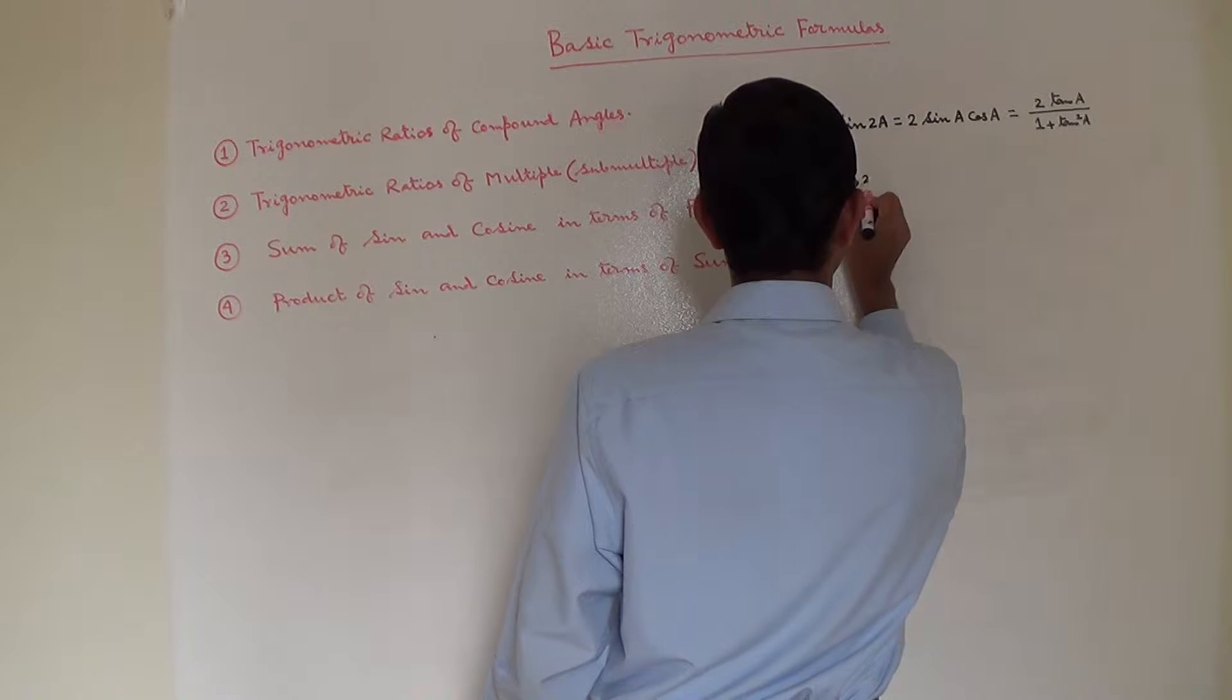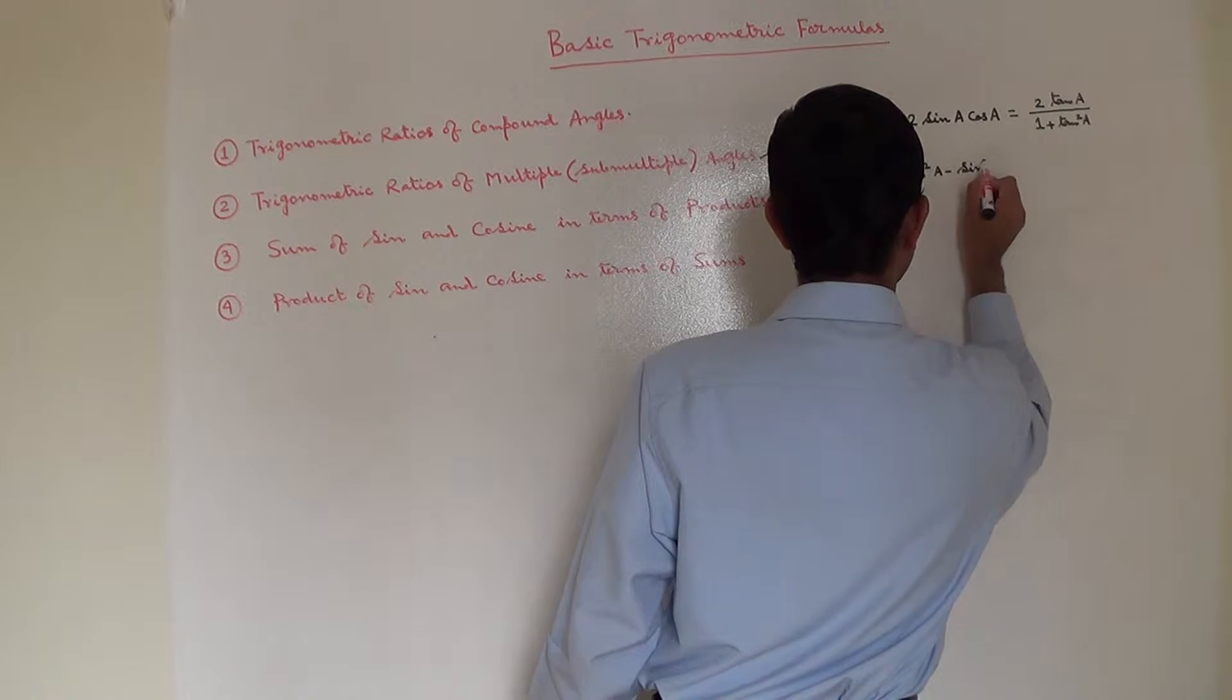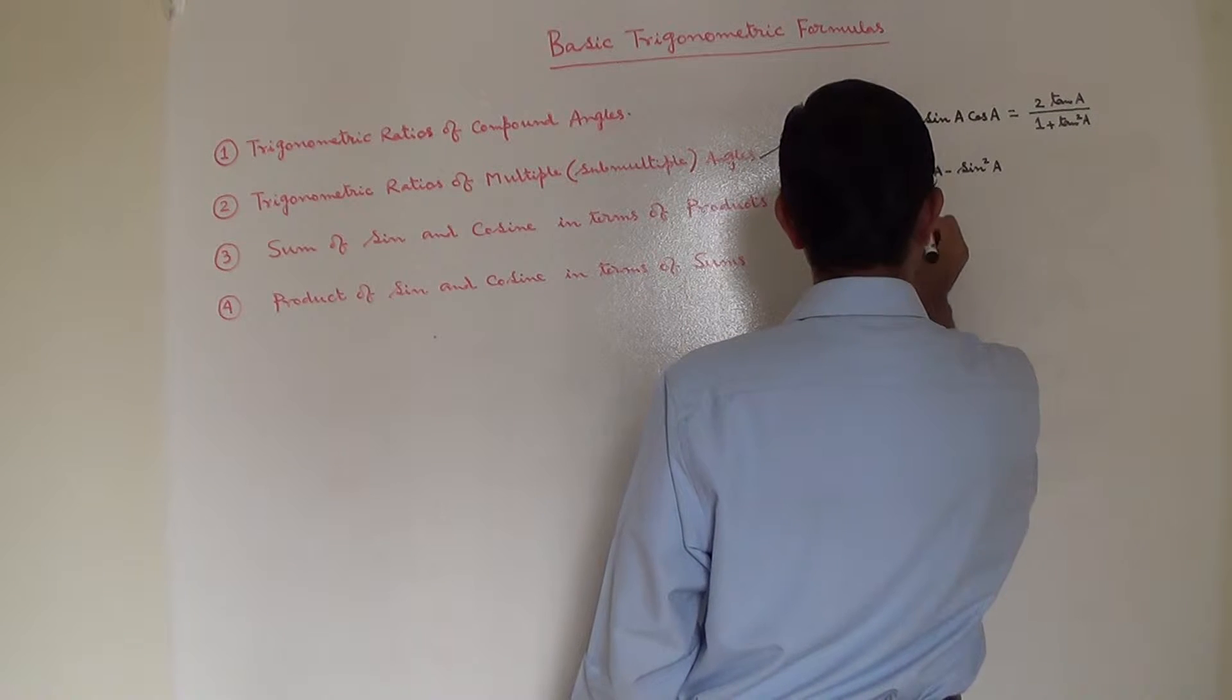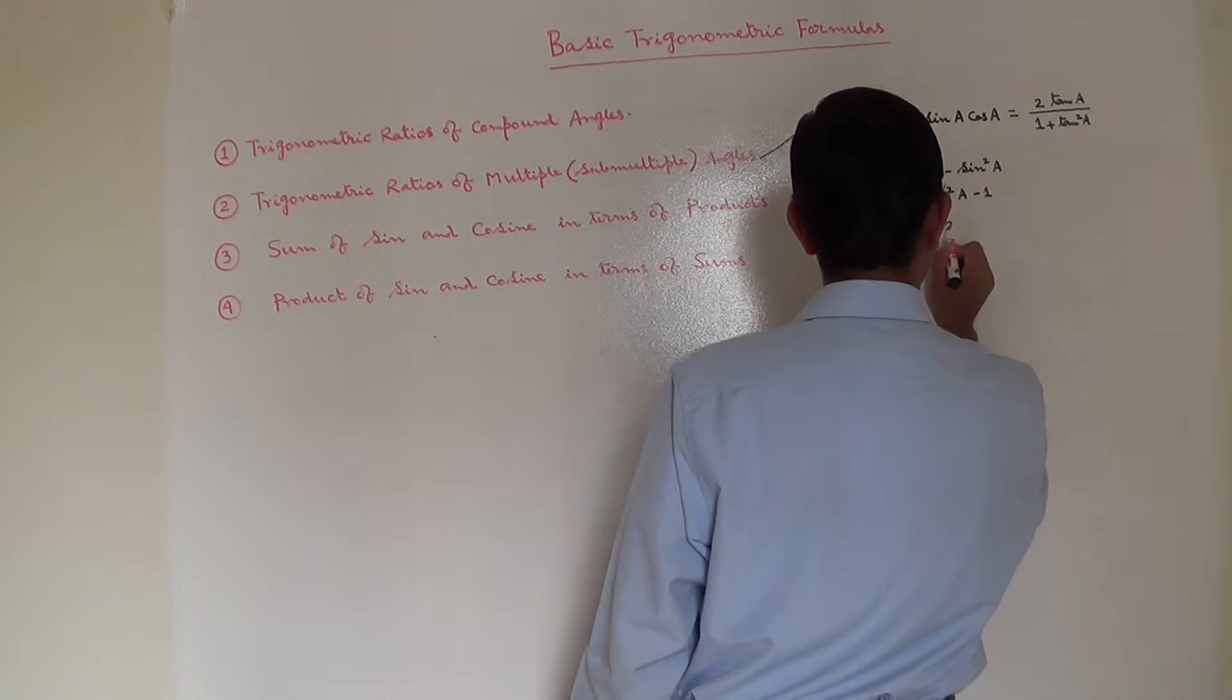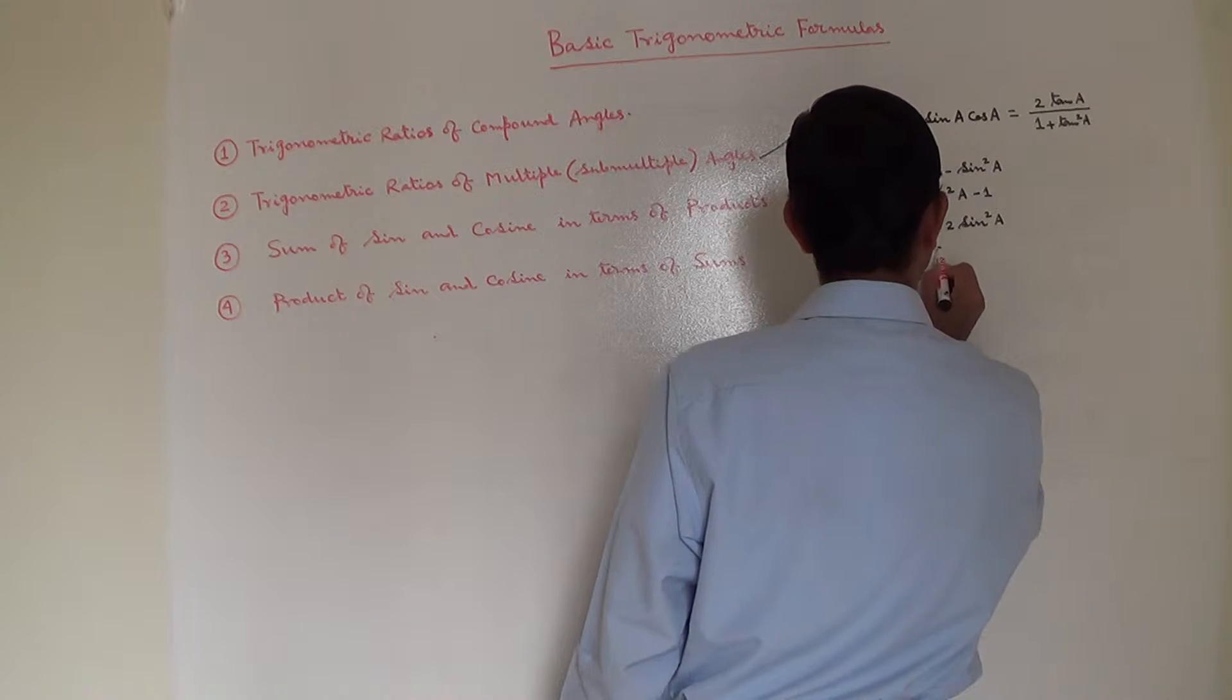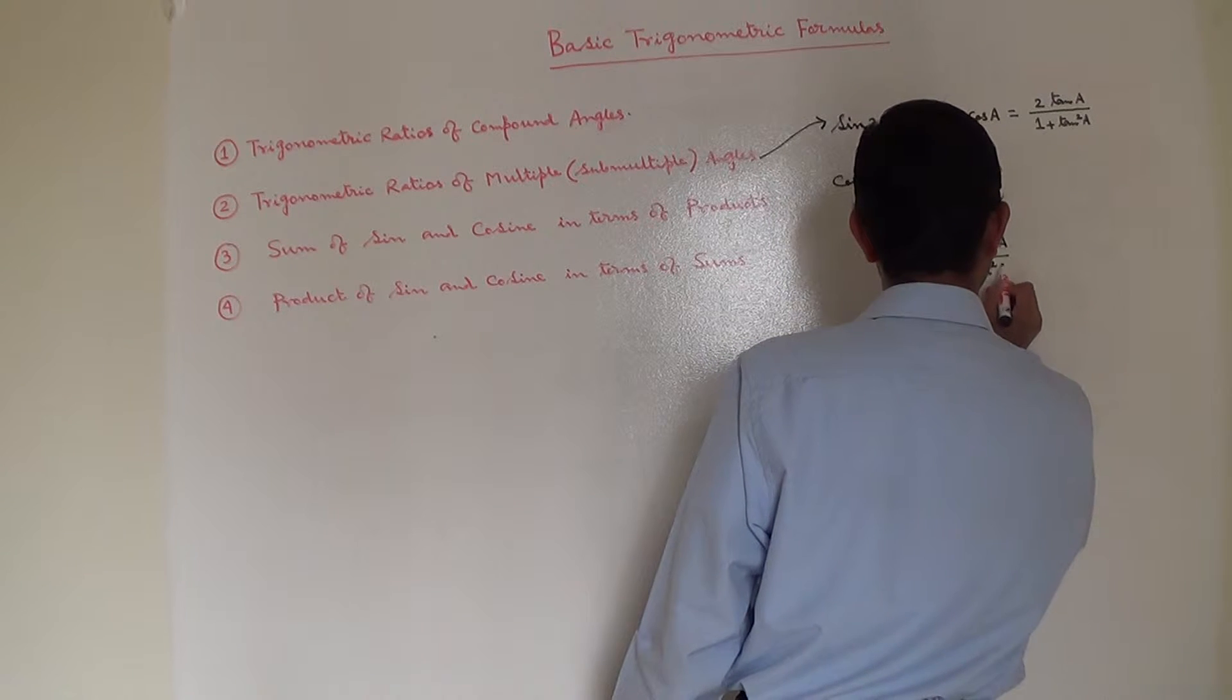Cos 2A is equal to cos square A minus sin square A. That is also equal to 2 cos square A minus 1. That is also equal to 1 minus 2 sin square A. And that equals 1 minus tan square A divided by 1 plus tan square A.